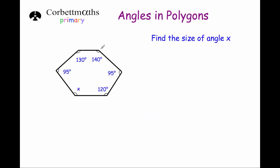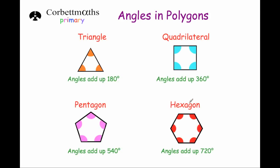Let's have a go at another question. Here we've got a hexagon, and the question says: find the size of angle x. As you know, there are six angles in a hexagon, and all six angles will add up to 720 degrees.